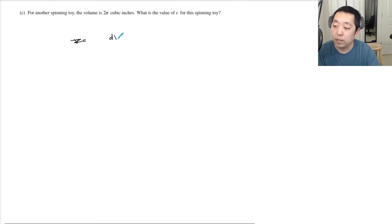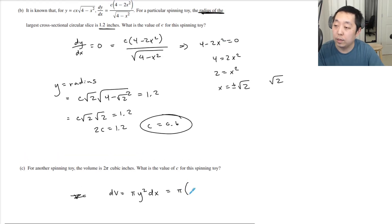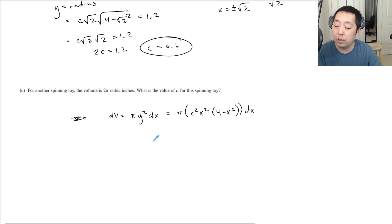What is y² equal to? My differential volume dV = π·y²·dx = π·c²·x²·(4-x²)·dx. So that's my little volume, and I want to sum up the volume of every disc from 0 to 2.